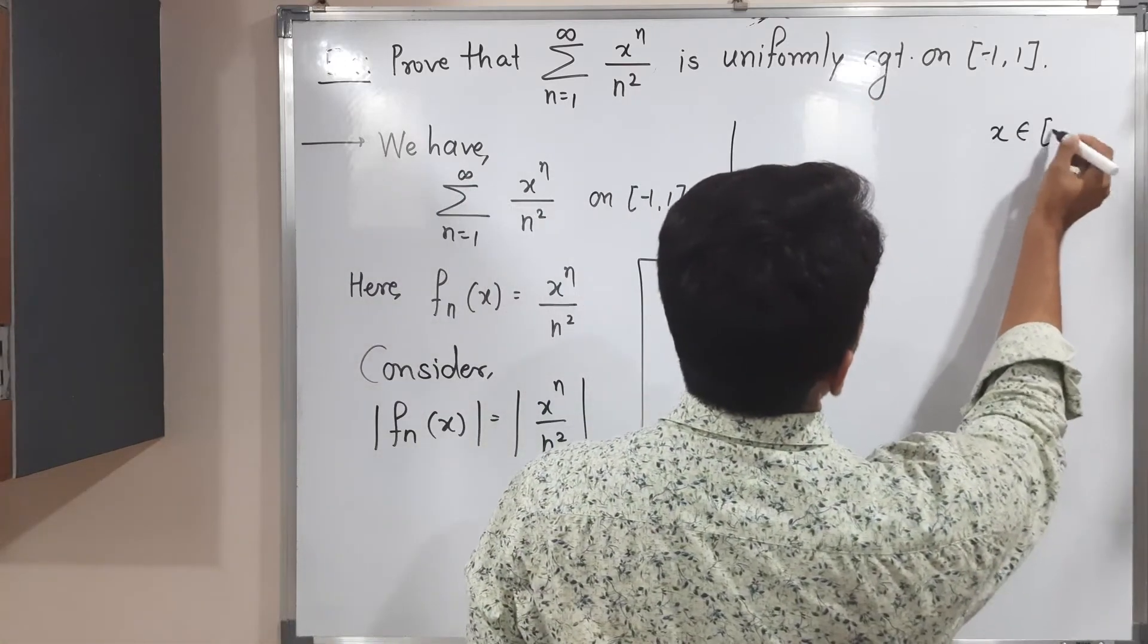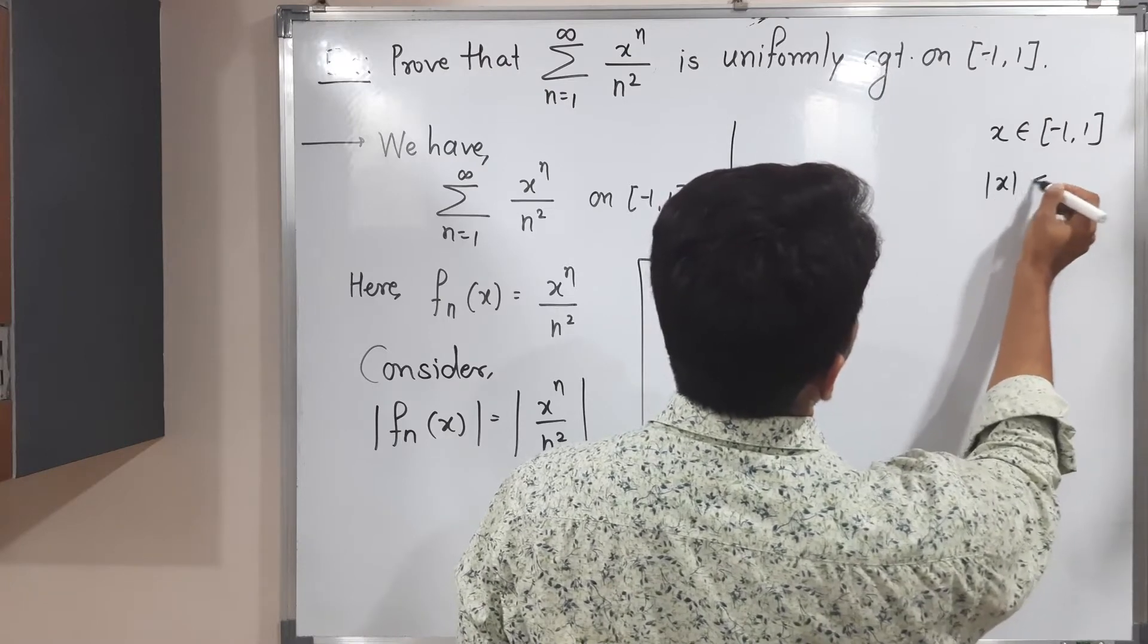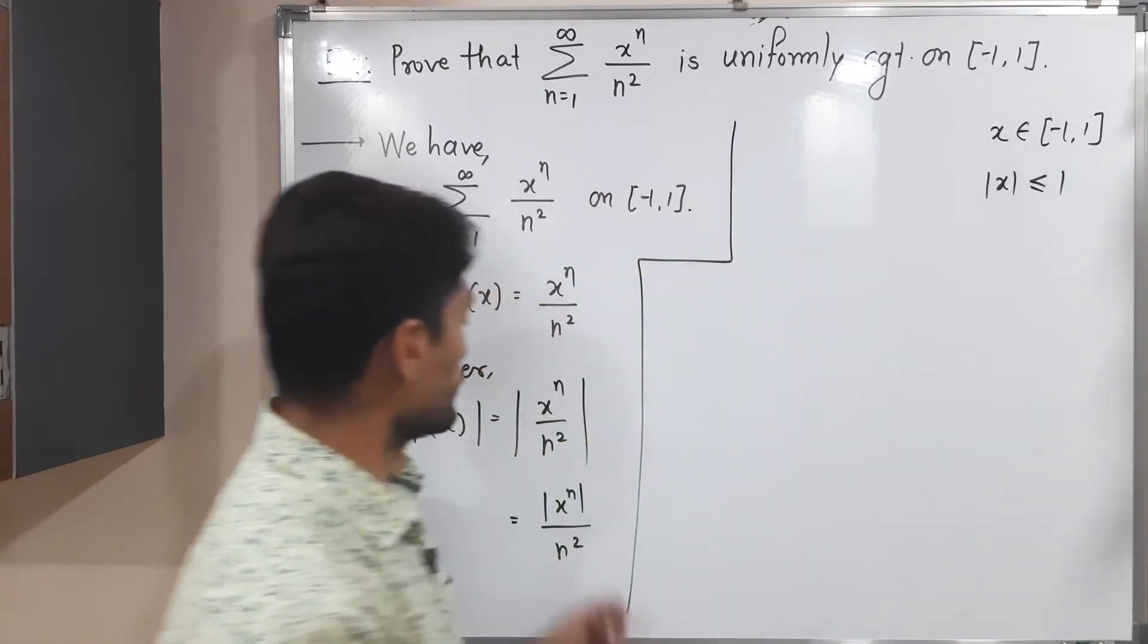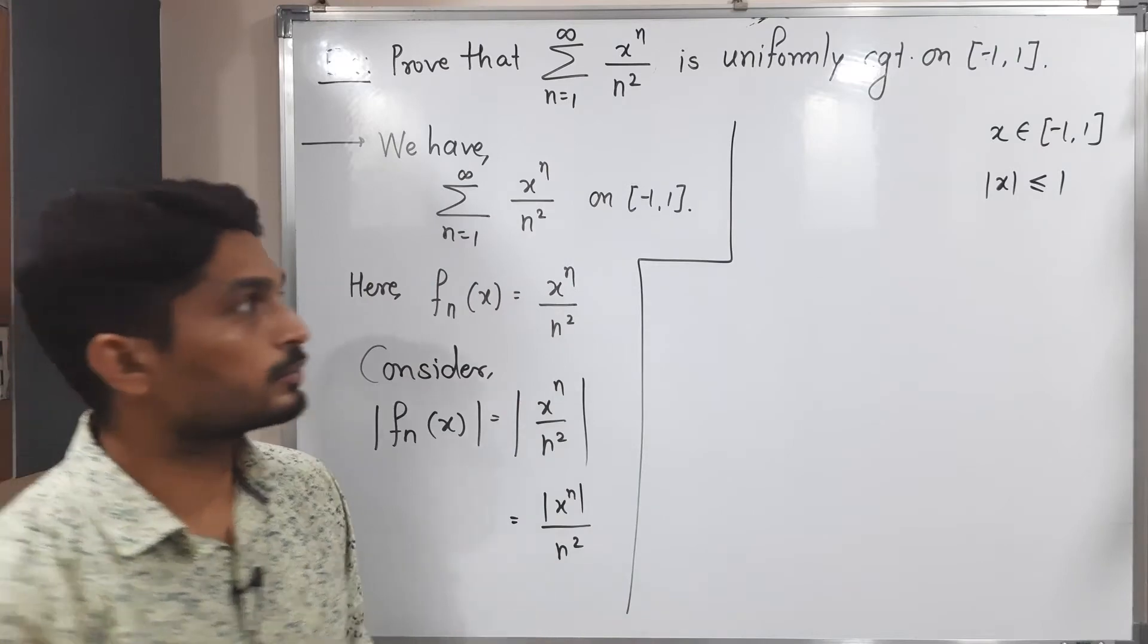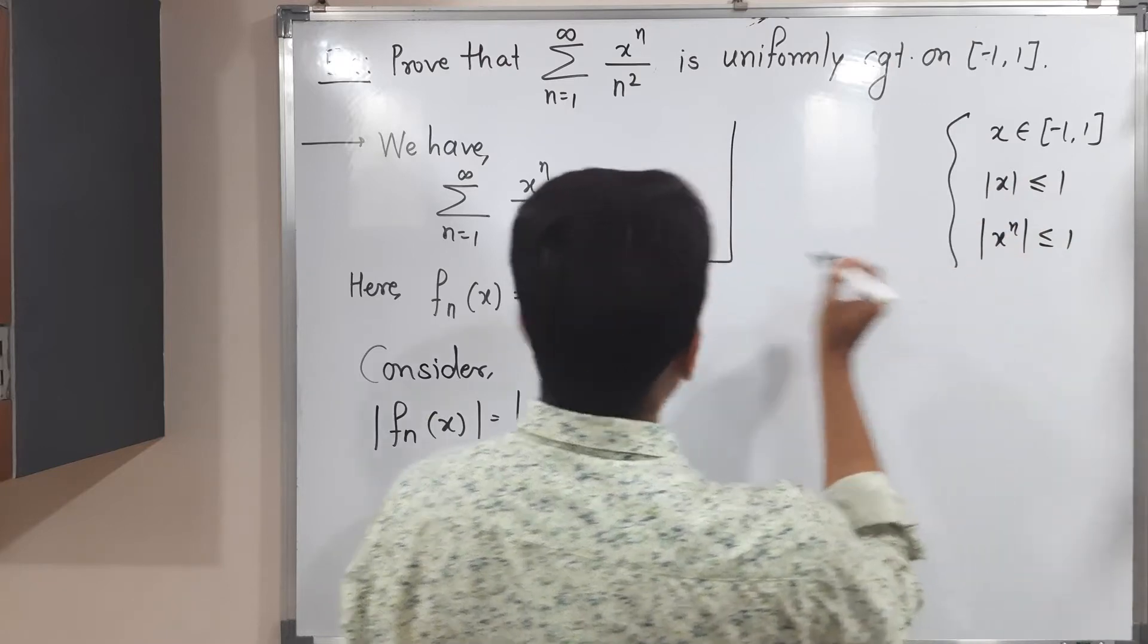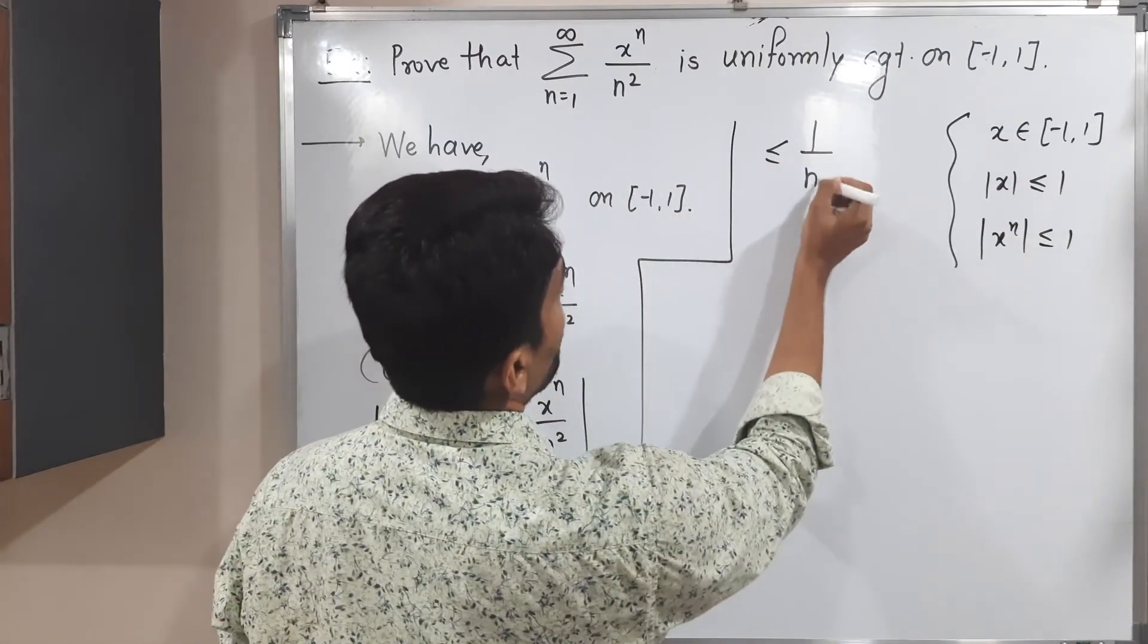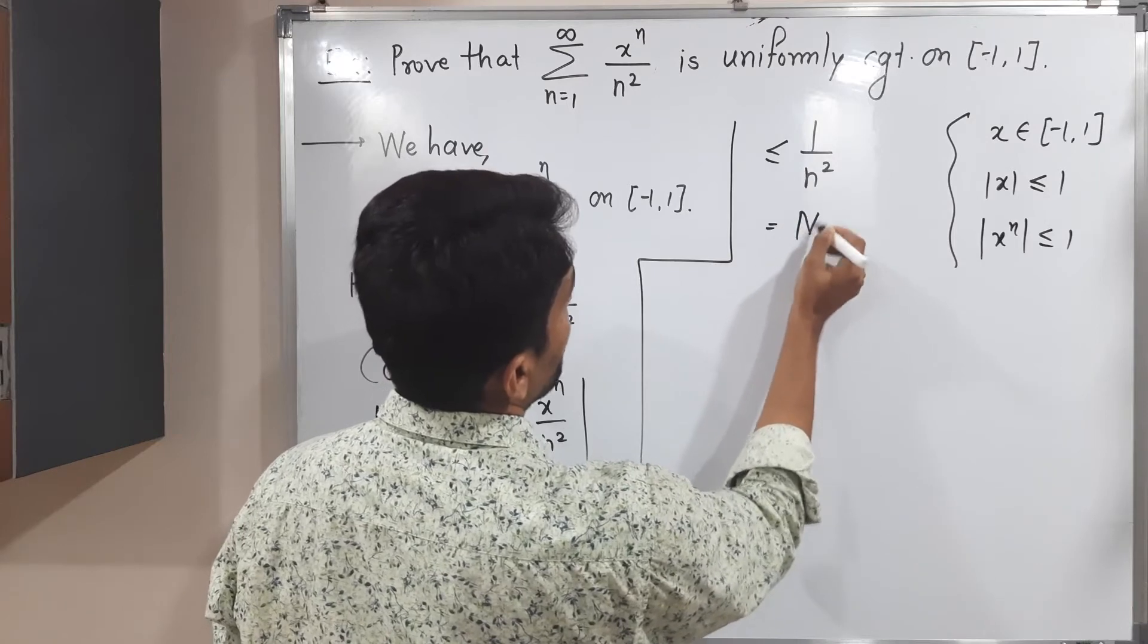x lies in minus one comma one, so mod of x is obviously less than or equal to one. If you take any power, mod x raised to n is also less than or equal to one. Because of that, this is less than or equal to one upon n square, I'm calling it as mn.